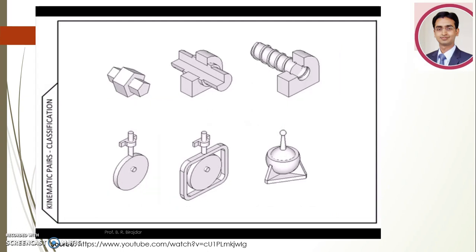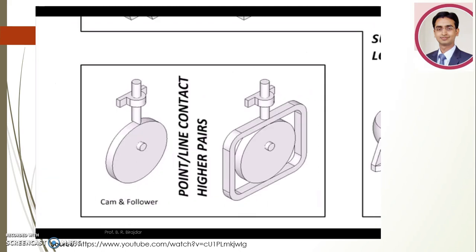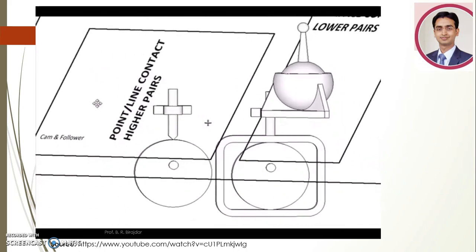Finally, the last classification is according to the contact between the two bodies. Here the contact is made all over the prismatic surface, or across a cylindrical, helical, or spherical surface. When we have such surface contact, they are called lower pairs. When the contact occurs only along a line or a point, such pairs are called higher pairs.